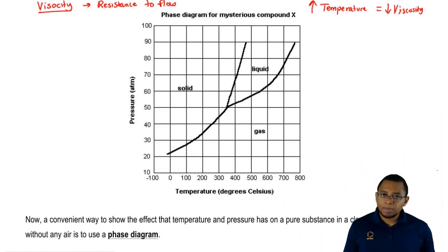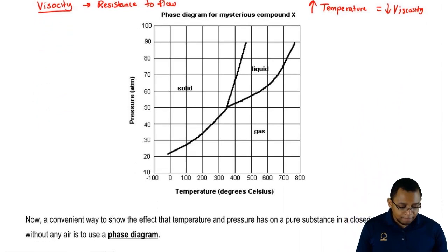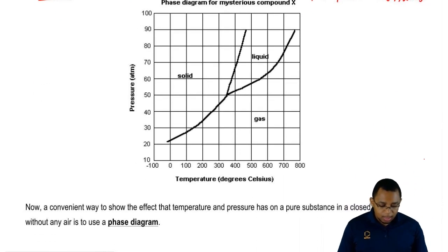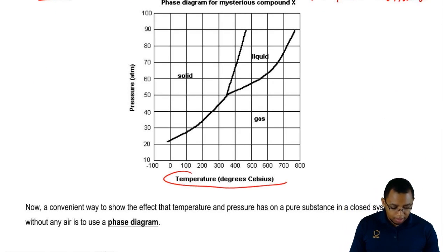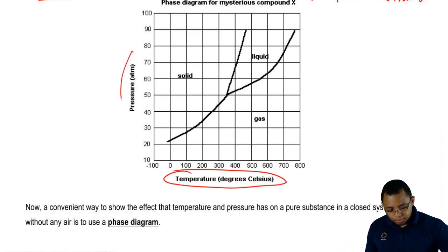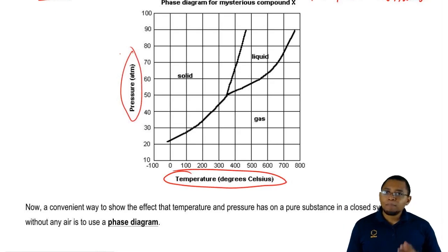Associated with the three different phases are these properties, but also what we call a phase diagram. This shows the effect that temperature down here and pressure have on a pure substance in a closed system.